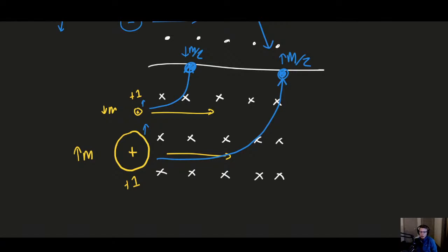Today we're focusing on magnetism, but briefly: M+1 in mass spec is basically an ion that hasn't fragmented — it's the actual molecular mass. The +1 is an isotope of that molecule. If you have a carbon atom that's C-13 instead of C-12, the M+1 peak appears because that molecule has a molecular mass one unit higher due to the isotope. M+2 exists for the same reason. But today is really about magnetism.